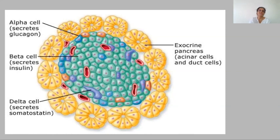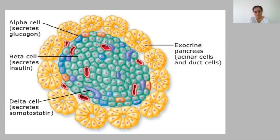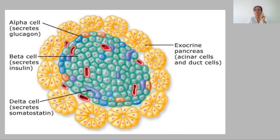Insulin is secreted in response to high blood sugars. Whenever you eat anything — whether carbs, protein, or fat — the pancreas are called upon to secrete insulin to convert that into energy, which is taken up into the cells for proper functioning. The delta cells can be called the grandfather of both alpha and beta cells, because delta cells secrete somatostatin, which manages and regulates both glucagon and insulin.